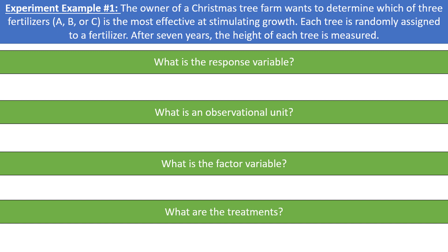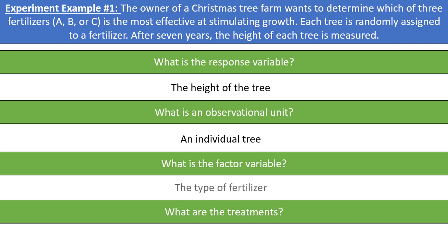The response variable is the height of the tree — this is what we are measuring after the seven-year period has elapsed. The observational unit is an individual tree, as the tree is what we are measuring the height from. The factor variable, which is our explanatory variable, is the type of fertilizer. Since there is only one factor variable, the treatments are simply the three levels of the factor variable: either fertilizer A, B, or C.